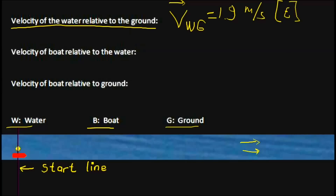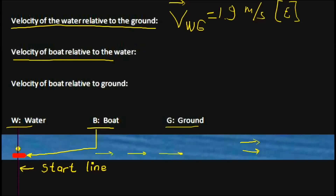There is a boat here, shown in red. This boat can travel with a speed of 2.8 meters per second in still water. This time the boat is going to travel to the east, parallel to the shore, downstream. So the velocity of the boat relative to the water, V_BW, is 2.8 meters per second east.